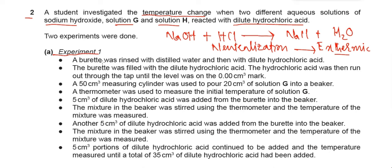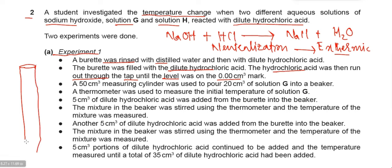In the procedure, the examiner mentioned that a burette was rinsed with distilled water — just to ensure it is pure and no impurities are present in the burette. Instead of 'rinsed' we may also write 'washed'. Then the dilute hydrochloric acid was used to rinse it further, removing any sort of impurities. After that, the burette was filled with the dilute hydrochloric acid.